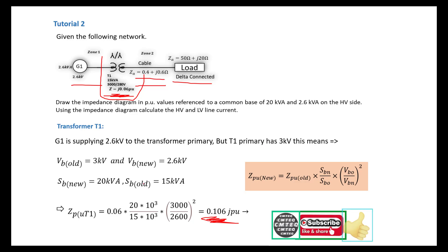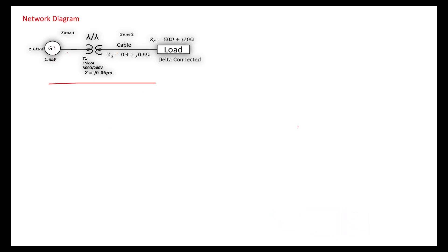Remember the old per unit which is 0.06 is given here. Now we move on to the next zone, zone 2 for the cable. For the line, we need to find the zone voltage calculation.